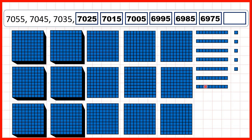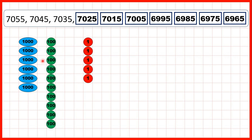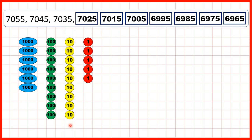Now we can continue counting back in tens until we get to 6,965. Again, we can show place value counters to show the counting. We start with seven thousands, no hundreds, five tens, and five ones. We can subtract tens until we get to 7,005. But then, to keep on subtracting tens, we need to change our thousands — exchange one of our thousands for ten hundreds — so that we can exchange one of those hundreds for ten tens. And then when we subtract ten, we get 6,995. Remember, if we're counting back in tens, the ones digits will always stay the same. Then we can continue subtracting tens until we get to 6,965.